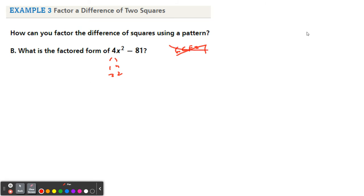But I do recognize that 4 and 81 are perfect squares. So I know that this is going to be parentheses minus, parentheses plus. That's the form. So what squared gives you 4? Well, that's 2, and x squared is x squared, so that's 2x squared. There's my minus sign.